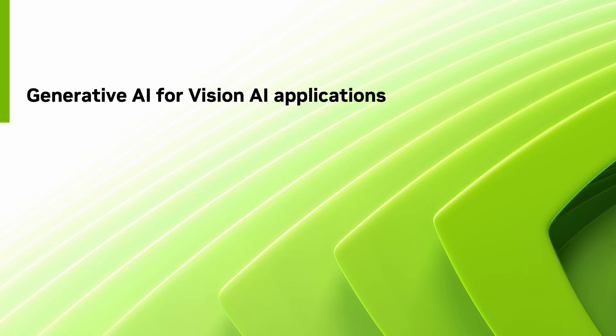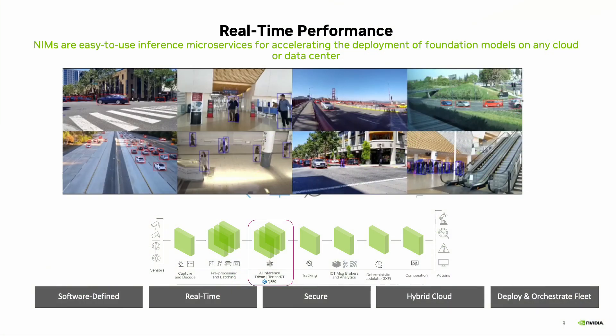Let us take a look at generative AI for vision AI applications. When building a computer vision system for video processing, the pipeline is complex — many requirements must be considered. Input from a camera needs to undergo pre-processing, decoding, and so on. AI inferencing is the brain of the pipeline, and even after that there is tracking, overlaying the output, sending the stream to an IoT server, composition activities, and more. When you use NIMs, inference is as fast as it can be and real-time performance is accelerated.